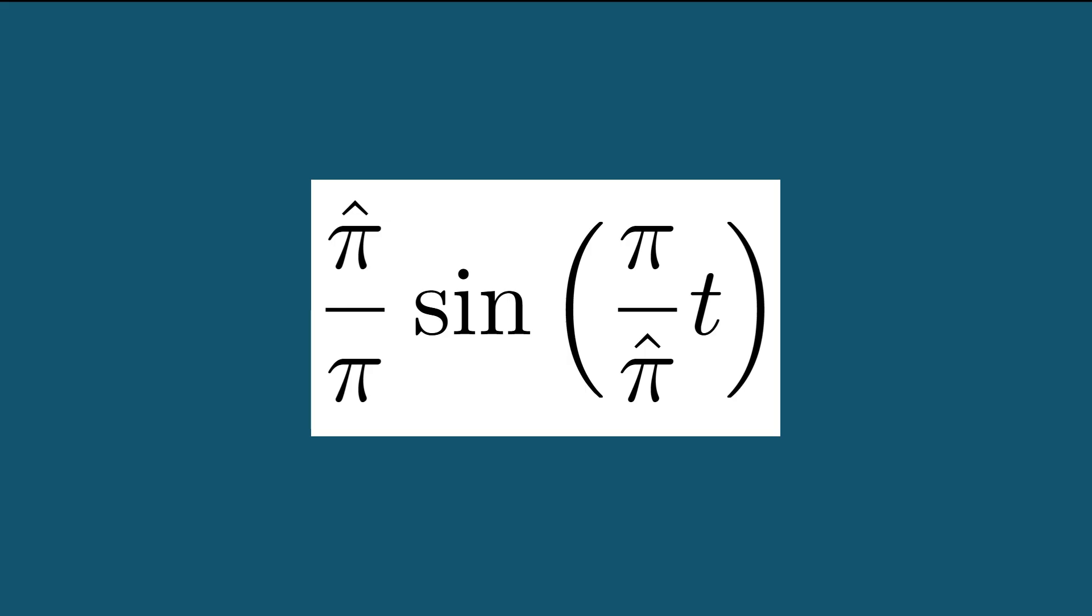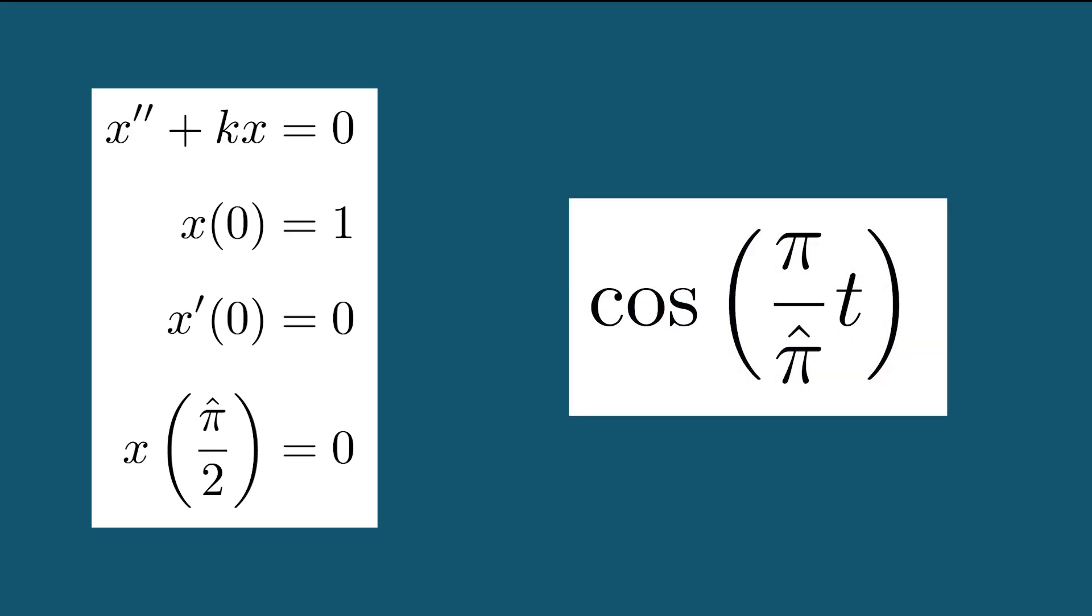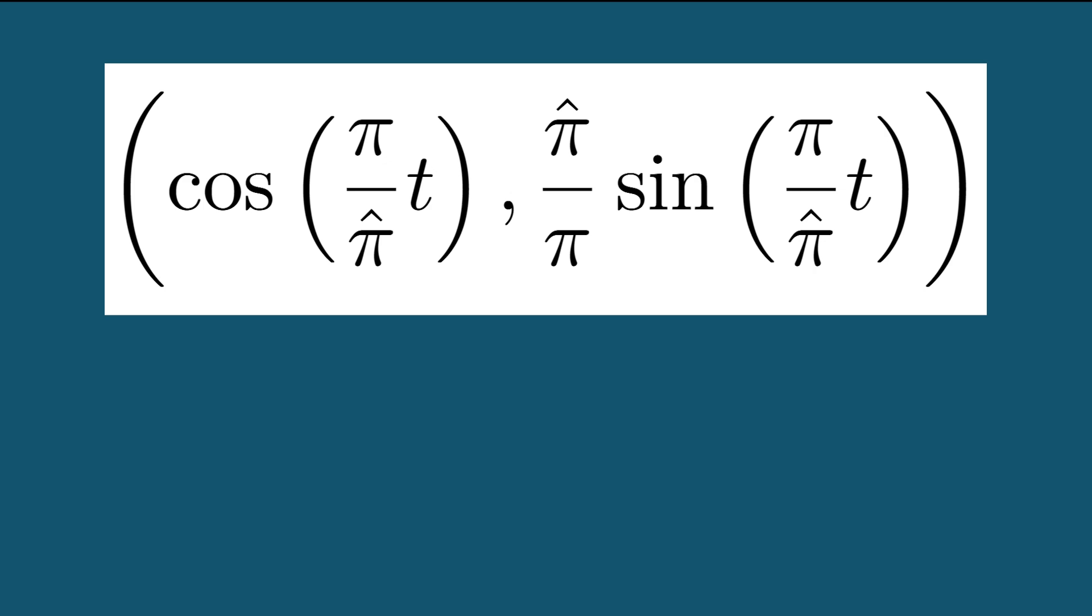We can change our initial conditions so that the position starts at one and velocity starts at zero, and then enforce that our first zero crossing happens at pi hat over two. Applying the same process as before, we can find the solution cosine pi over pi hat times t. We can define a parametric curve using these two solutions.